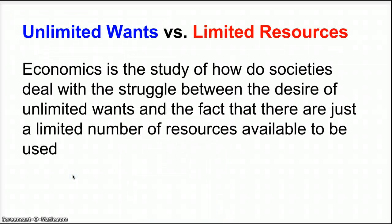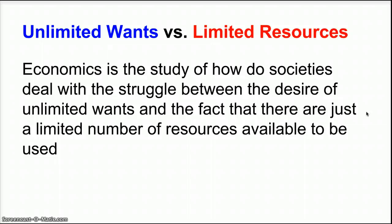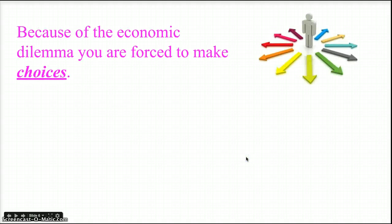To summarize: on one hand we have unlimited wants for many goods and services, and yet those goods and services can only be produced to a certain amount because of the limited resources needed to produce them. Economics is really the study of these two struggling, opposing aspects — the desire for goods and services being limited by the amount of resources available. The question is: what do we produce and who gets it? Because of this, everyone has to make choices about how we're going to use our limited resources.